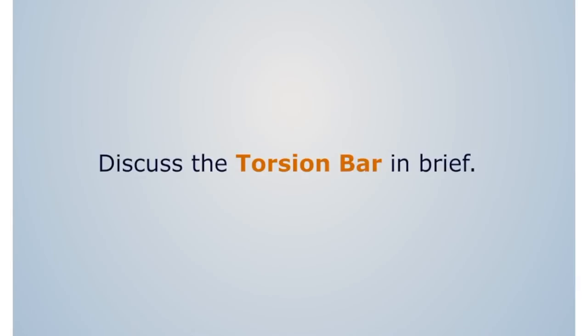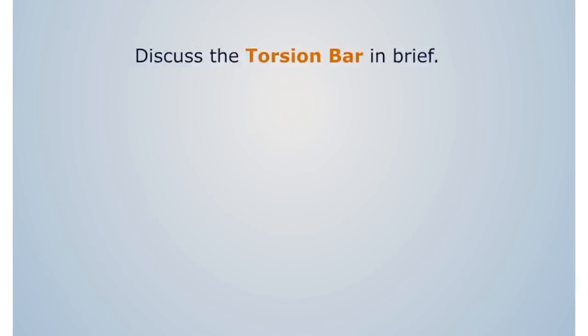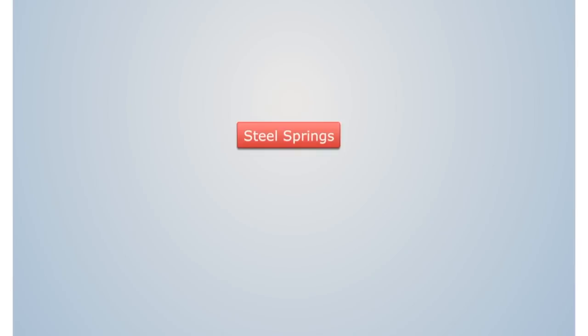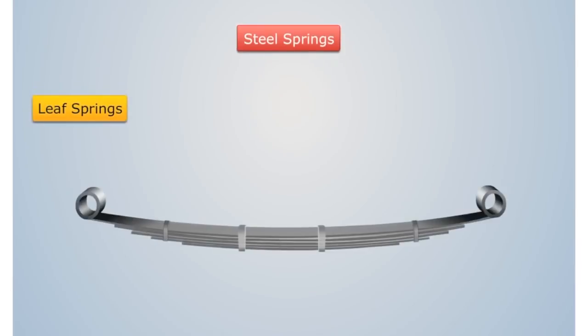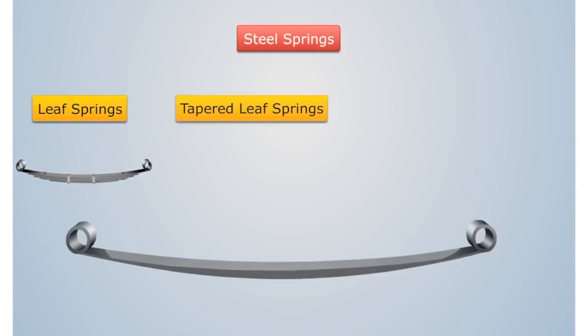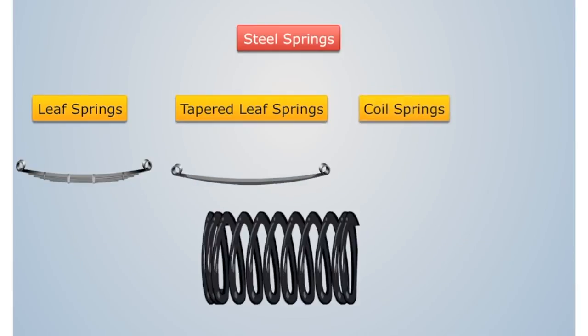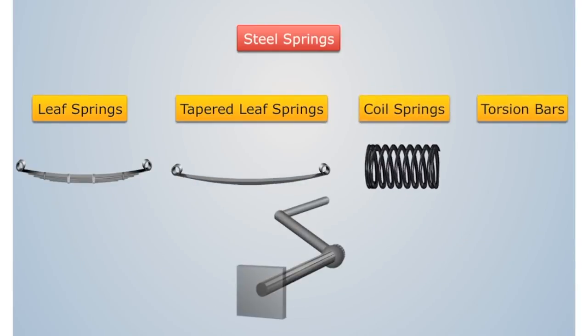Discuss the torsion bar in brief. We know that steel springs is mainly classified in four types: lip springs, tapered lip springs, coil springs, and torsion bars.